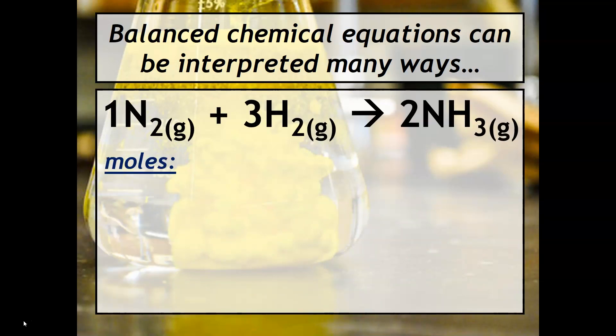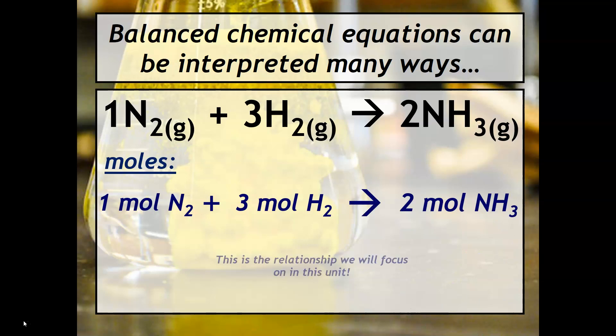Here's another relationship. Like I mentioned, we don't really focus so much on individual molecules. Instead, it's far more helpful and far more useful for chemists to talk about large quantities of atoms and molecules, and that's where the mole comes in. We could also look at this relationship as one mole of nitrogen reacts with three moles of hydrogen to produce two moles of ammonia. This is the relationship that we are going to focus on in this unit.